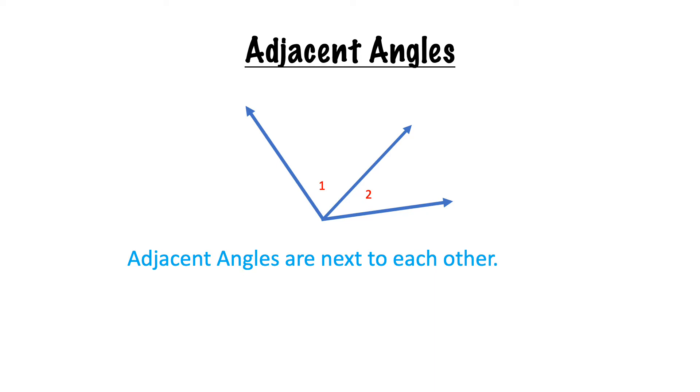Adjacent angles are next to each other. If you notice, adjacent angles share a common side. Angle one and angle two are adjacent because they share a common side. They're sort of like neighbors.